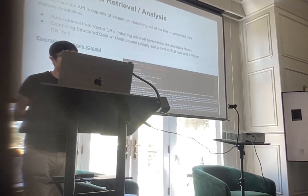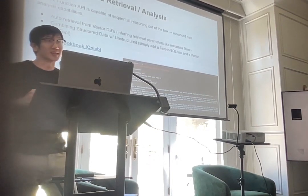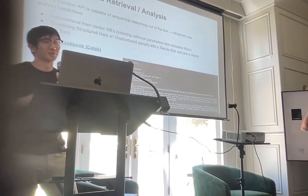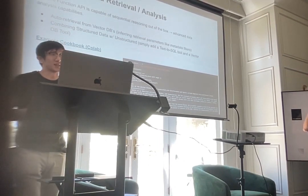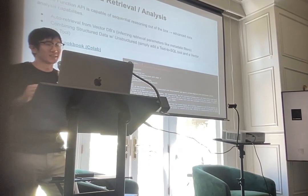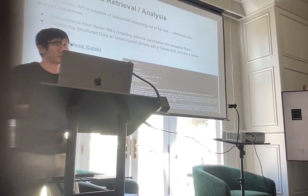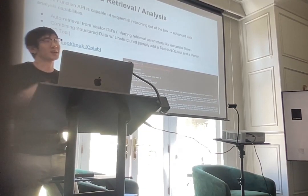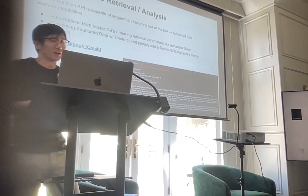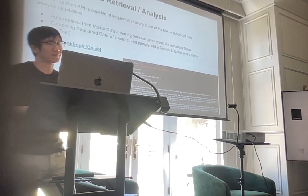Beyond simple API interfaces, because this agent loop can do sequential reasoning out of the box with a single call to the API, you can get some pretty advanced data analysis capabilities. One example is auto-retrieval from vector databases — inferring retrieval parameters like metadata filters before you query a vector database. You can pass this to the Function API, which directly infers those parameters to pass into the vector database. Additionally, if you have both a structured analytics tool and an unstructured analytics tool — one for vector databases, one for structured data — the agent itself can reason about complex interactions over your structured and unstructured data out of the box.